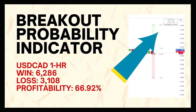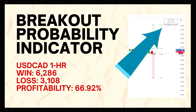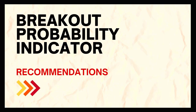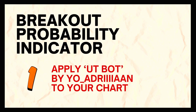It has won 6,286 trades and lost 3,108 trades, offering users a 66.92% profitability rate. I would recommend you ensure three specific steps before using this indicator. Number one: apply a second indicator called UTBOT to your chart to determine the direction of the market. If the market condition is for you to go long, only trade the long bias probabilities on the probability indicator and ignore the short bias probabilities.